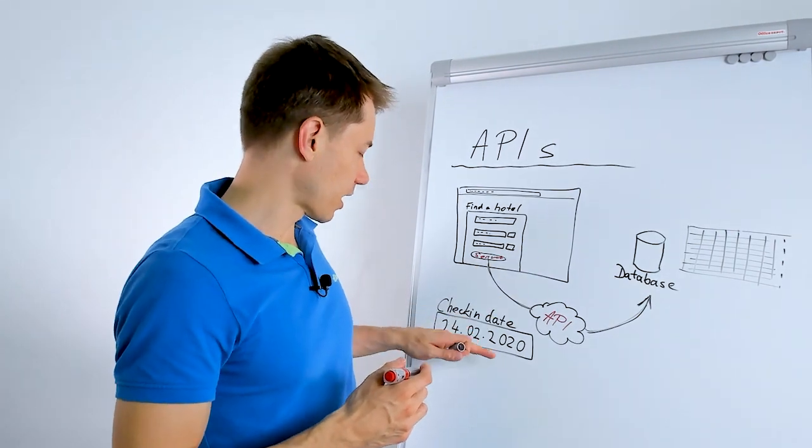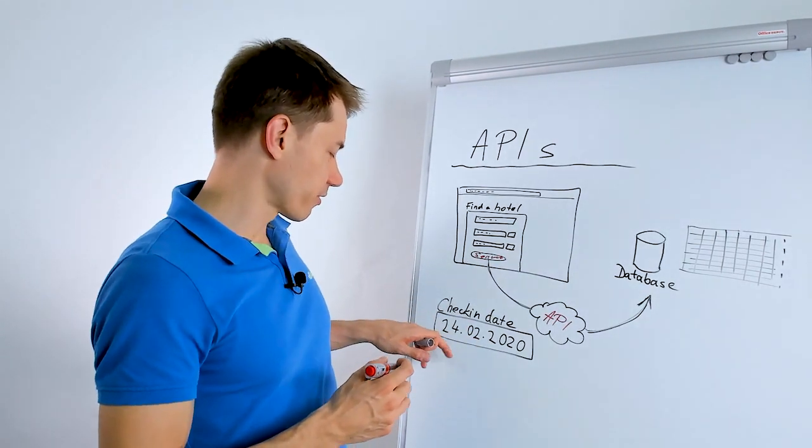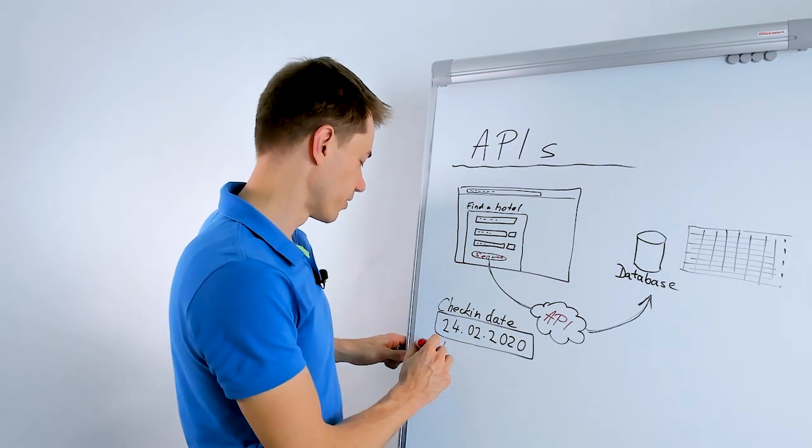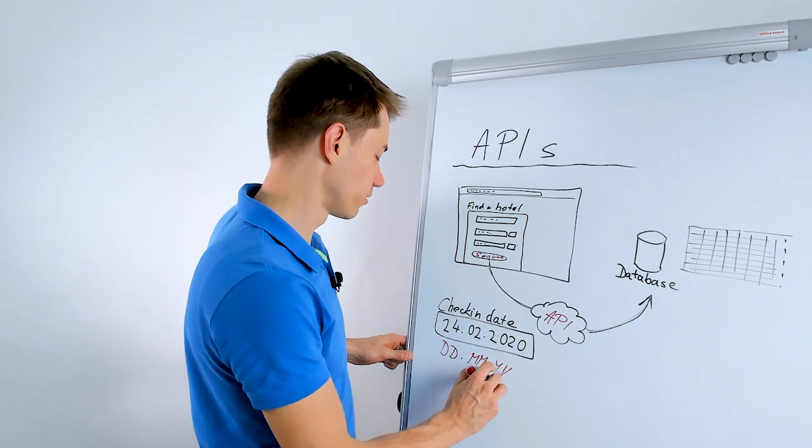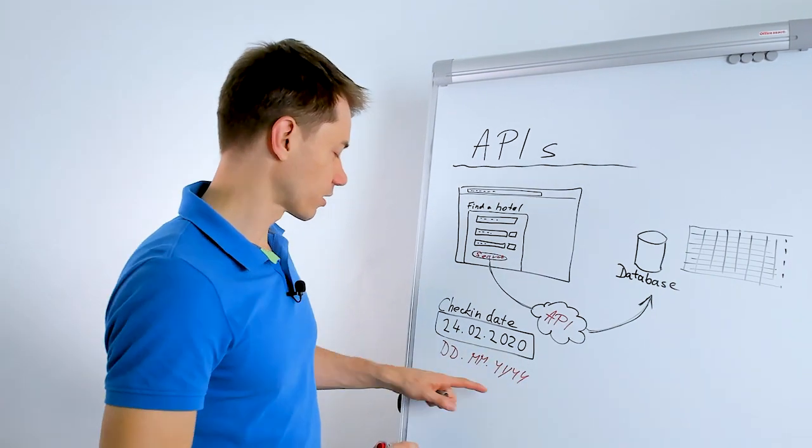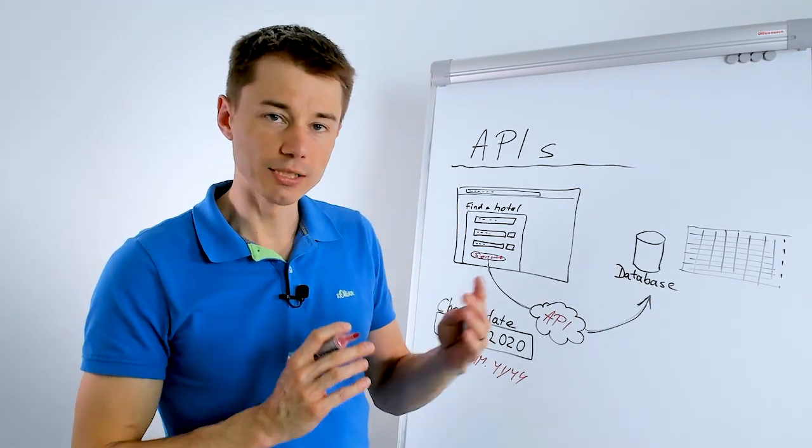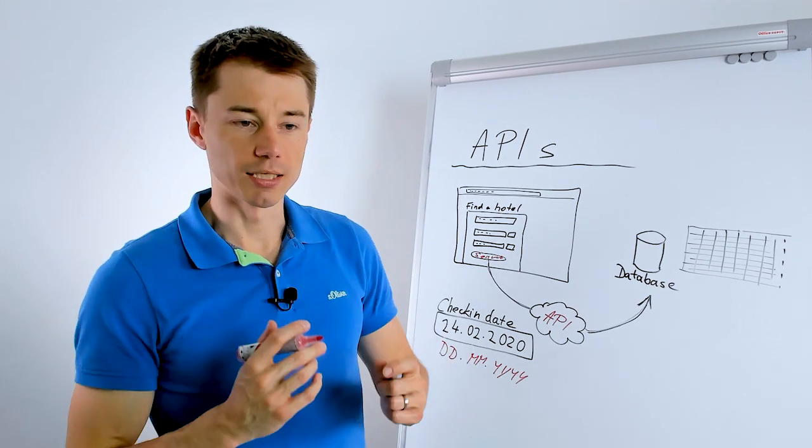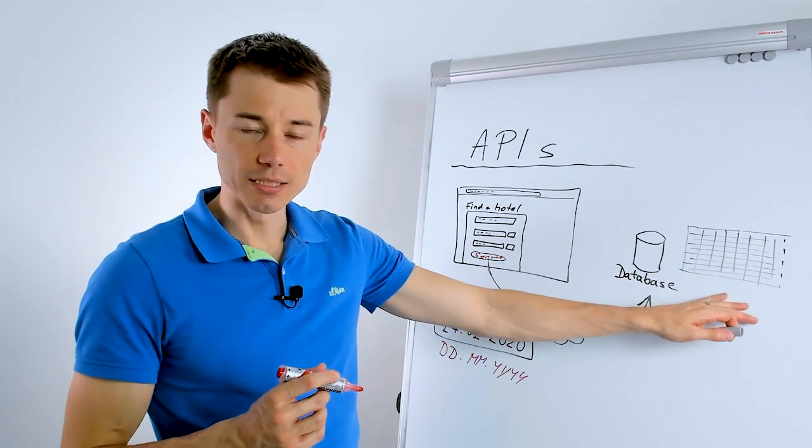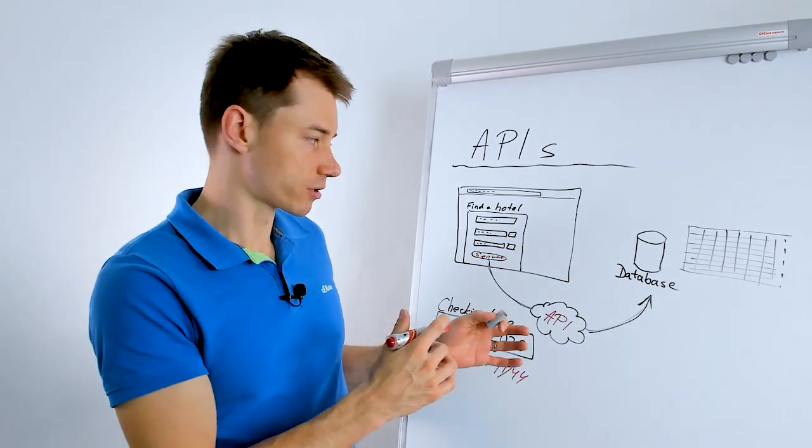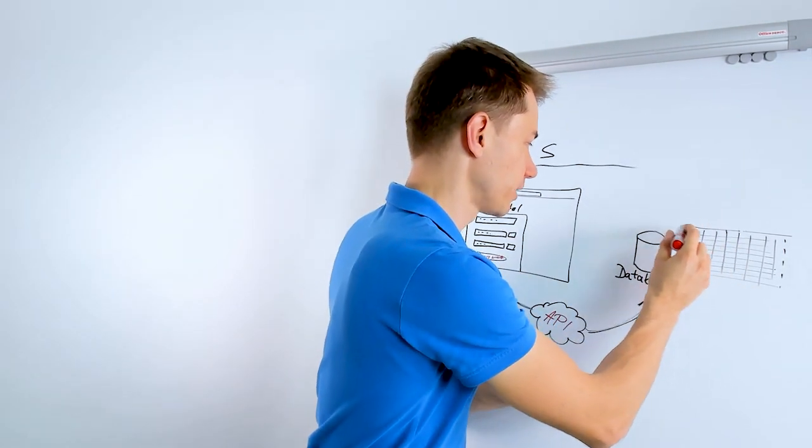And now I enter this date in this format, day.month.year, which is standard, for example, in Europe. But in United States, slightly different format is standard. So also in database, the other format could be used. So say here in the database, you have thousands of hotels and thousands of combinations of check-in, check-out availabilities.